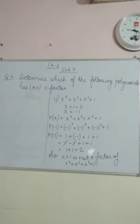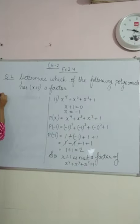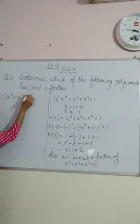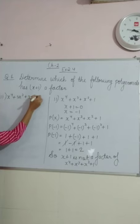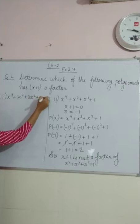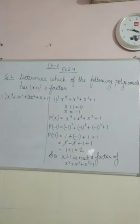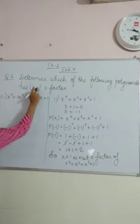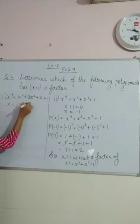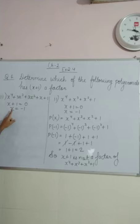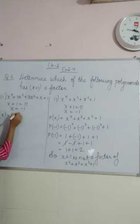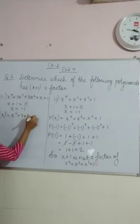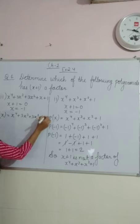हमारा third part है: x⁴+3x³+3x²+x+1. वही question से ही, उसी का next part है। x+1 check करना था, x+1=0. हमारा polynomial P(x) है: x⁴ + 3x³ + 3x² + x + 1. अब मुझे x की जगह minus 1 रखना है।